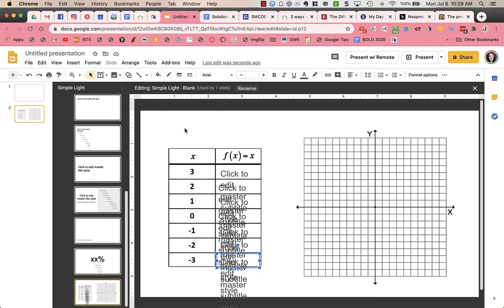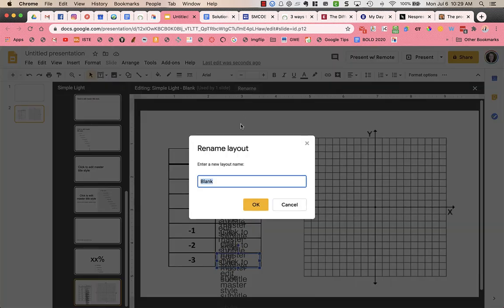This is my bottom slide. It was blank. I'm going to rename this. I might call this function graph. Whatever you want to call it. And maybe this one is just f of x, I think. And I'd say okay.